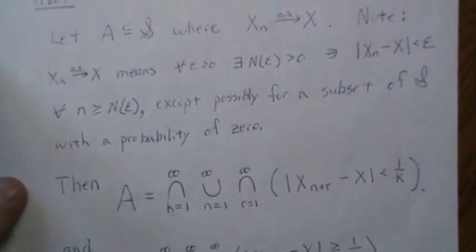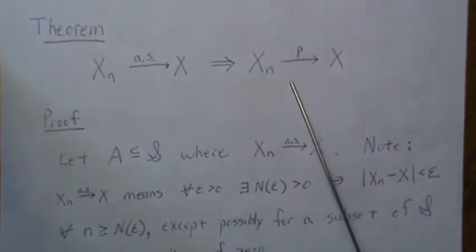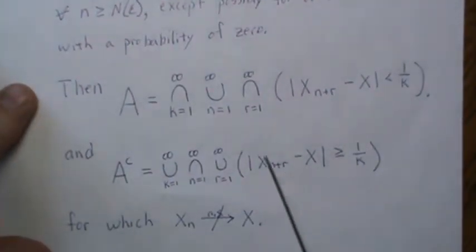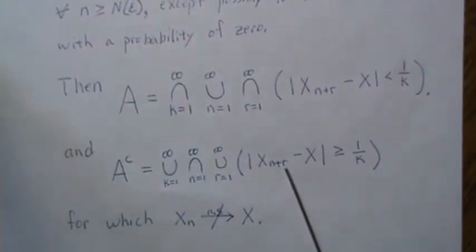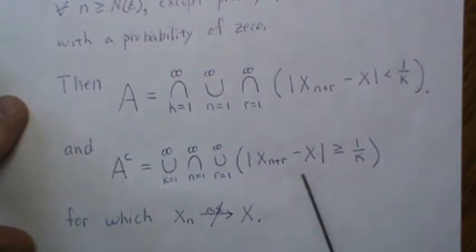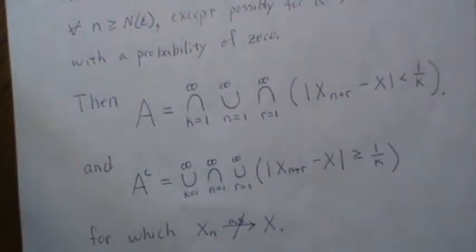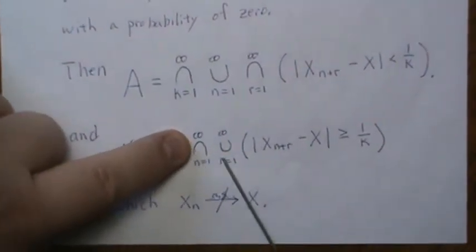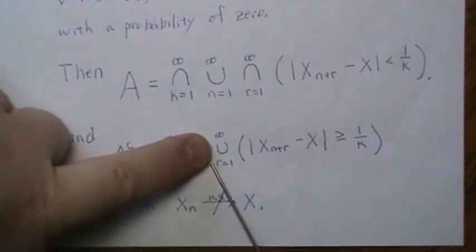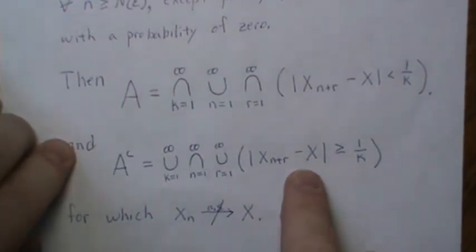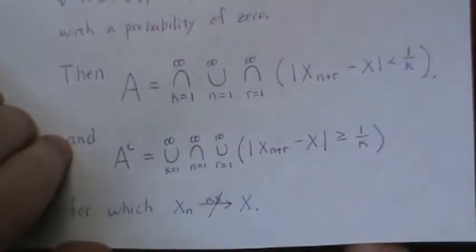So we're most of the way there. To show convergence in probability, we need to show that this set, for any epsilon, goes to zero. We know A complement goes to zero, so we're really close by showing this. Then what we'll do is break it up into pieces - we'll let this be a set and show that it goes to zero, and then let this be a set and show that it goes to zero. That's how we're going to prove that this piece goes to zero in probability.